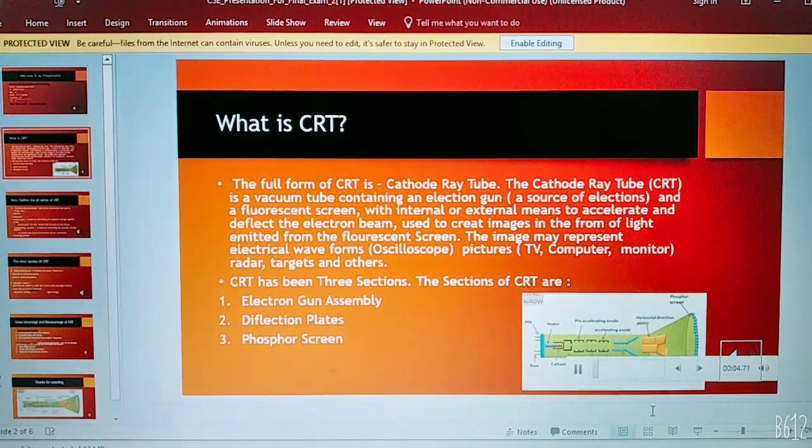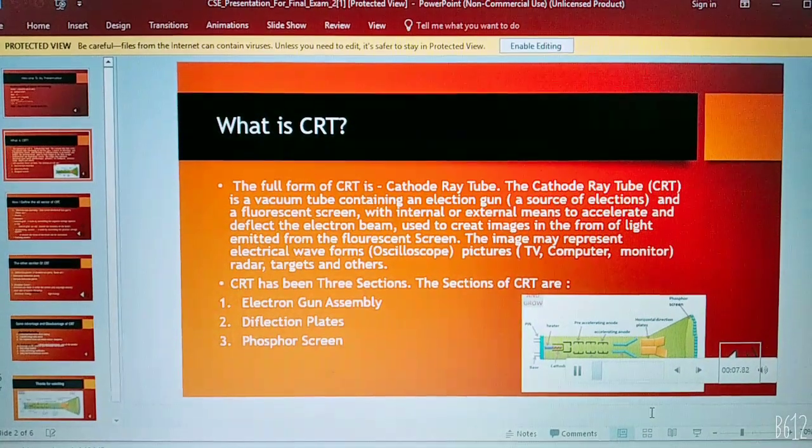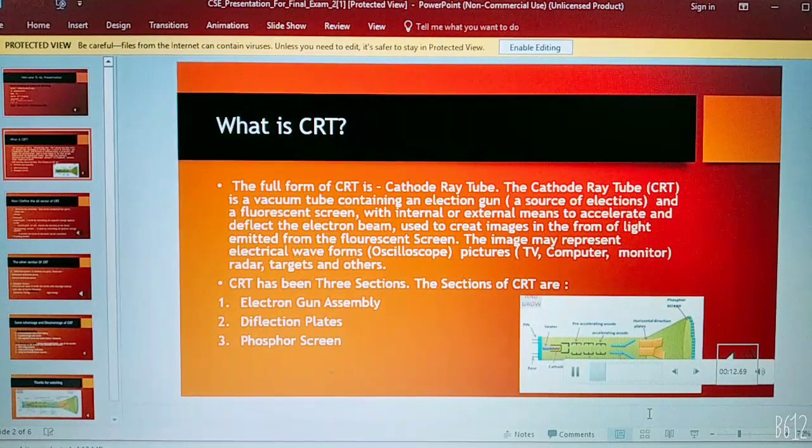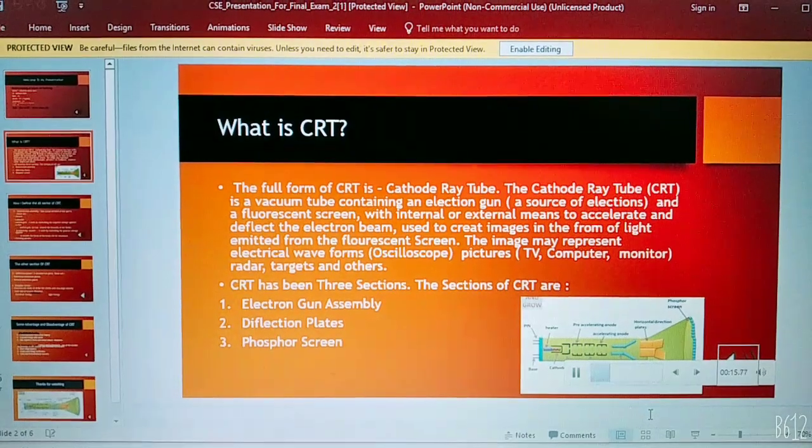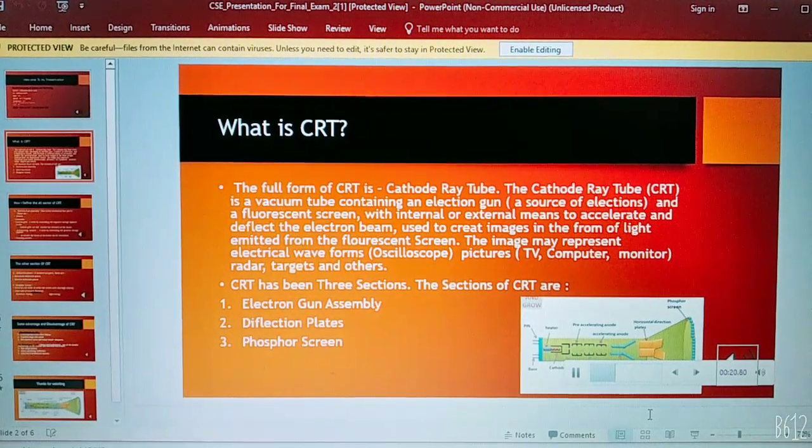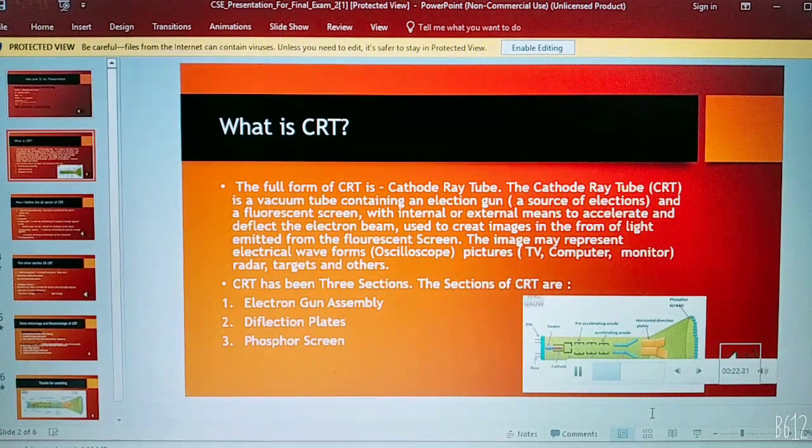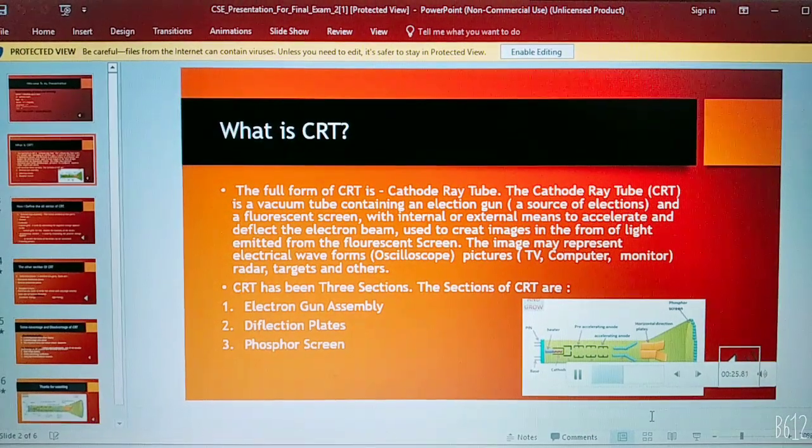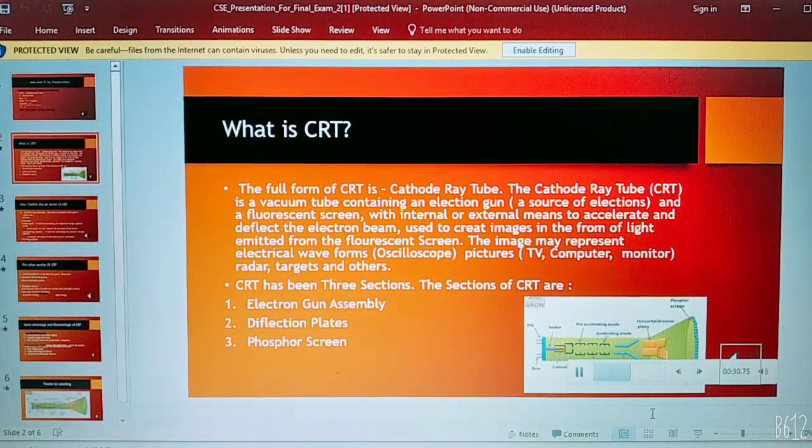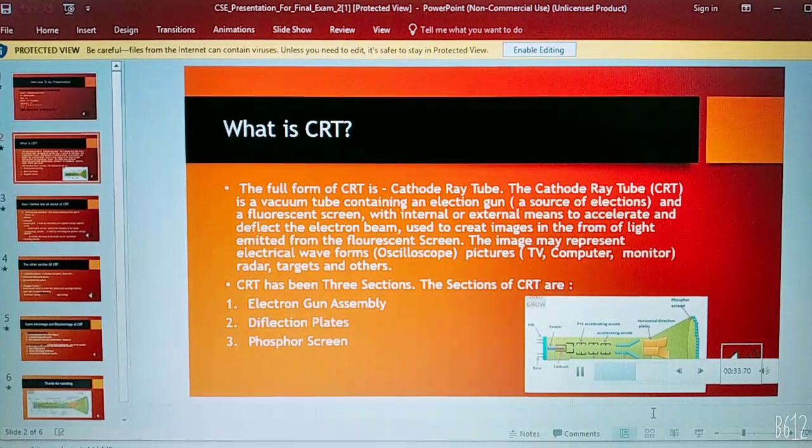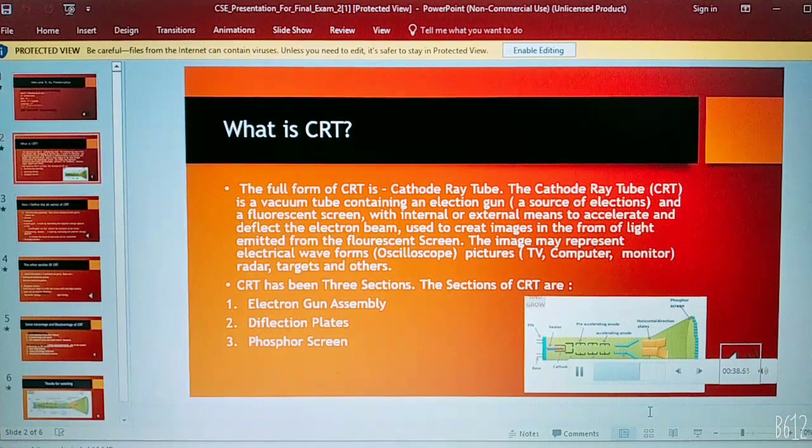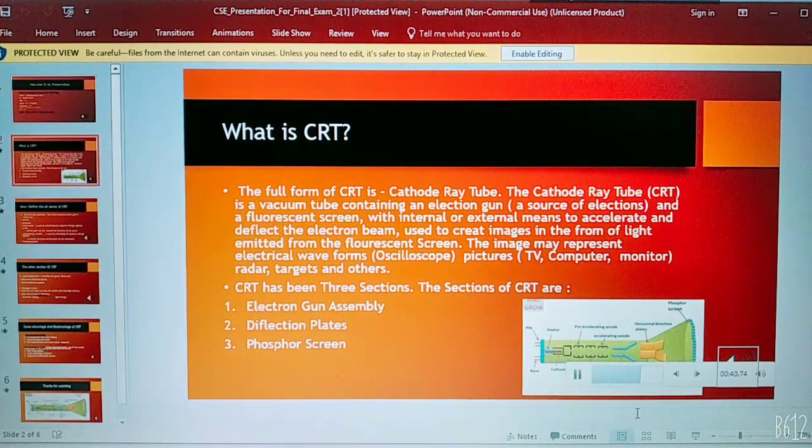The full form of CRT is cathode ray tube. The cathode ray tube is a vacuum tube containing an electron gun, a source of electrons and a fluorescent screen with internal or external means to accelerate and deflect the electron beam. Used to create image in a form of light emitted from the fluorescent screen. The image may represent electrical waveforms or pictures, television, computer screen, monitor, radar, targets and others.